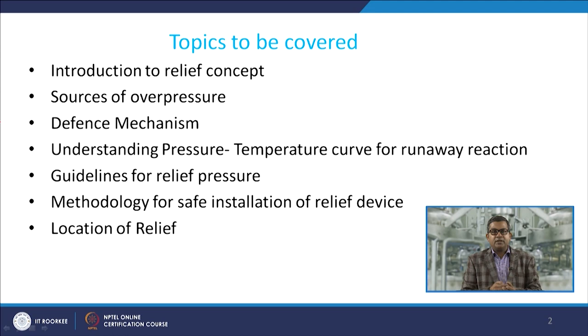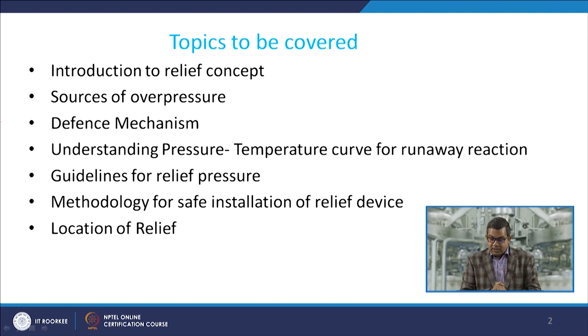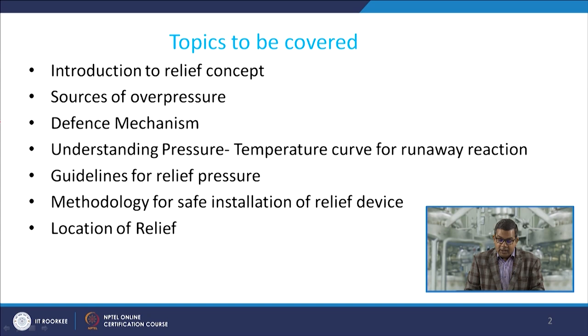Let us discuss the different safer mechanisms available. The defence against any pressure rise or rupture begins with inherent safety, which we have already discussed. The second line of defence is better process control, directing major effort towards controlling the process within the safe operating region. Dangerous high-pressure excursions must be prevented or minimised. The third line of defence is to install various relief systems to relieve liquid or gases before excessive pressures develop.